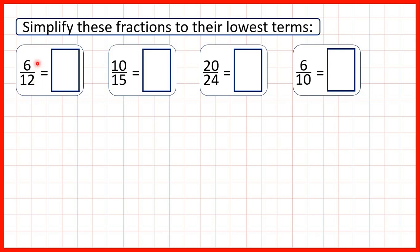So first we need to simplify 6 twelfths. 6 and 12 are both in the 2 times table, they're both in the 3 times table as well, but the highest common factor of 6 and 12 is 6 because that's the highest times table which has both numbers. So we can divide both 6 and 12 by 6 to get our simplified fraction. 6 divided by 6 is 1, 12 divided by 6 is 2, so simplifying 6 twelfths gives us 1 half.